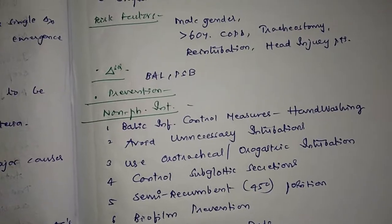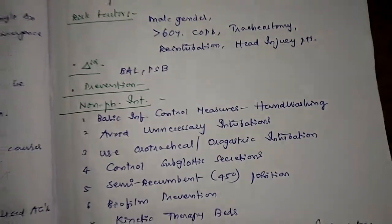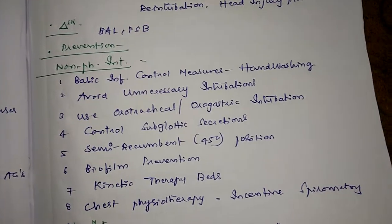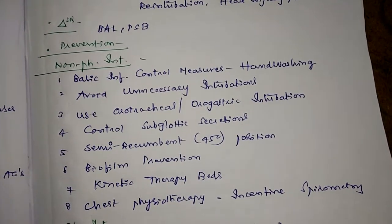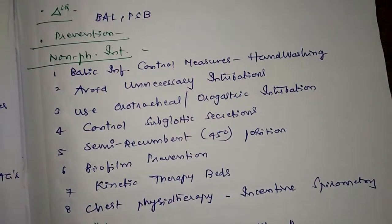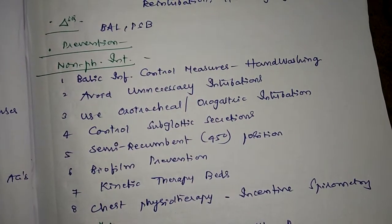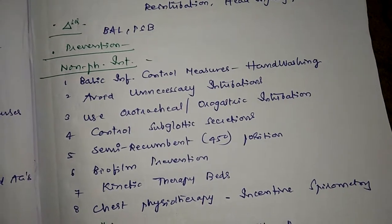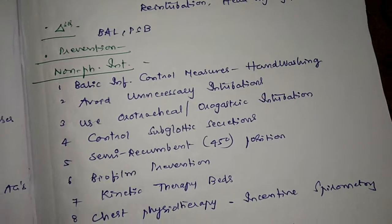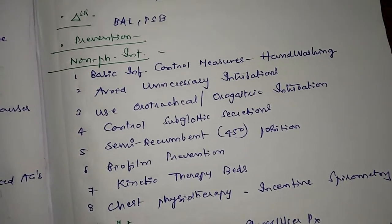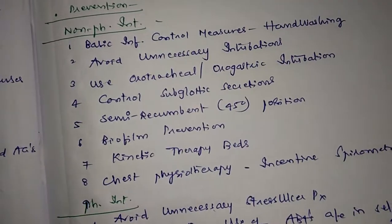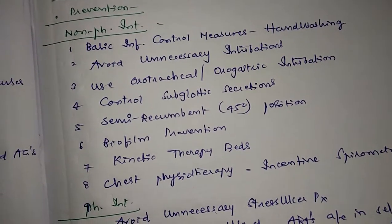To prevent postoperative pneumonia, non-pharmacological interventions include basic infection control measures like simple hand washing, avoiding unnecessary intubations, using orotracheal and orogastric intubation instead of nasogastric tubes, controlling subglottic secretions, and keeping the patient in a semi-recumbent position — 45 degrees — to avoid aspiration of intragastric contents.